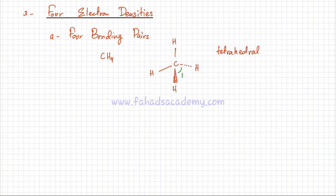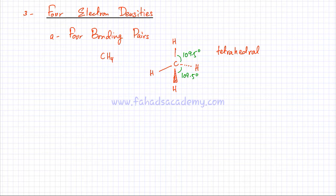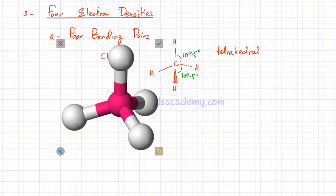All the bonding angles between the bonds are 109.5 degrees. The four bonds stay as far away from each other as possible in three-dimensional space. To better represent this three-dimensional tetrahedral shape: there's a carbon atom in the center with four hydrogen atoms attached to it.